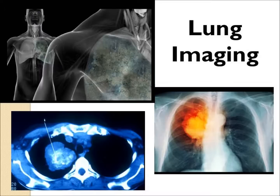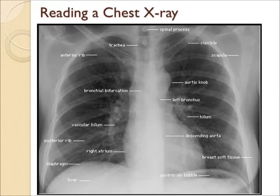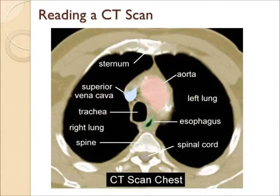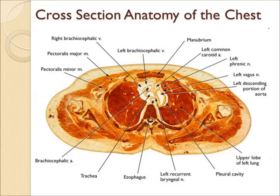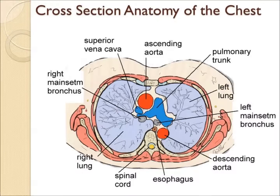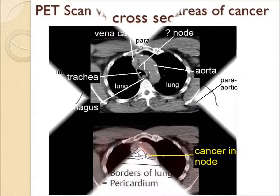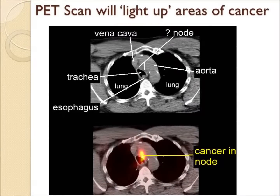Imaging typically starts with a chest x-ray and leads to a CAT scan, and probably a PET scan. The anatomy on a chest x-ray is somewhat limited, while the anatomy on a CAT scan is much more detailed — it is a series of cross-section images through the chest showing all the detailed anatomy. A PET scan uses radioactive sugar or glucose, which lights up areas of malignancy and will separate a gray area on a CAT scan from a cancer area.